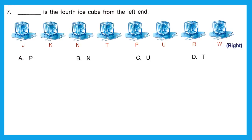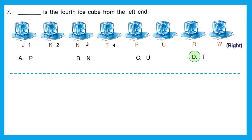Question 7: 'Dash is the fourth ice cube from the left end.' The right end is already marked, so the opposite end is the left end. Counting from the left: first is J, second is K, third is N, and fourth is T. So the right option is D.